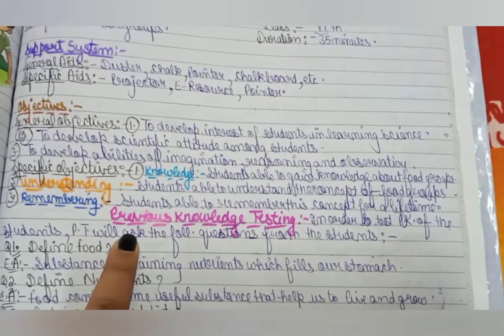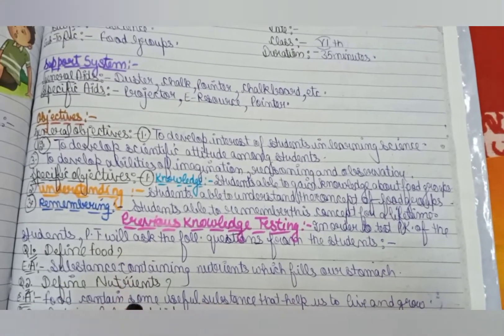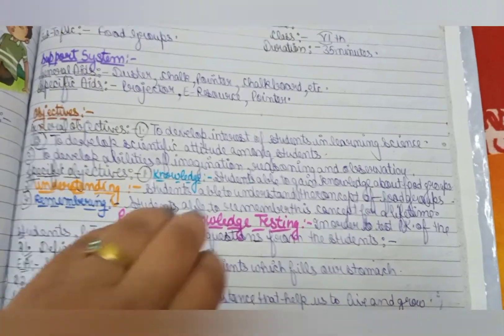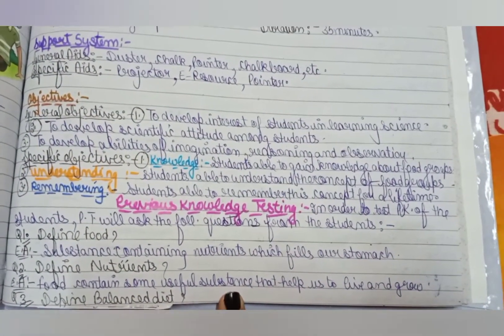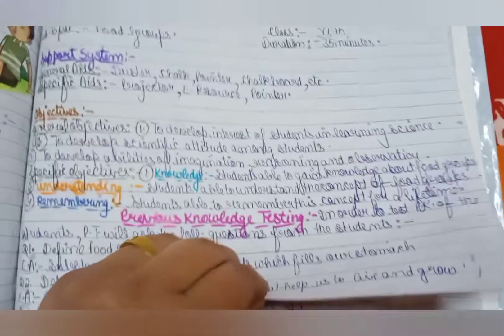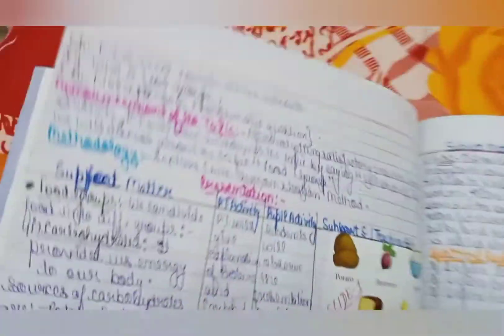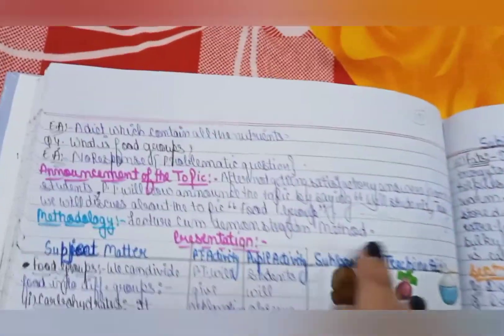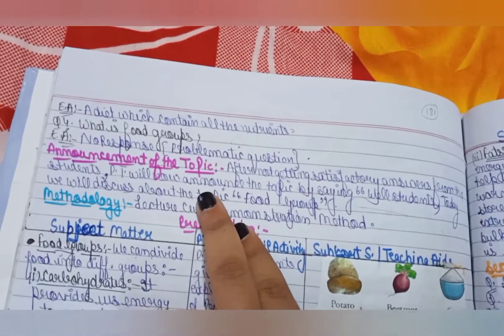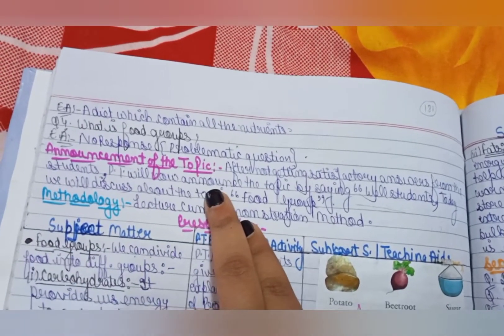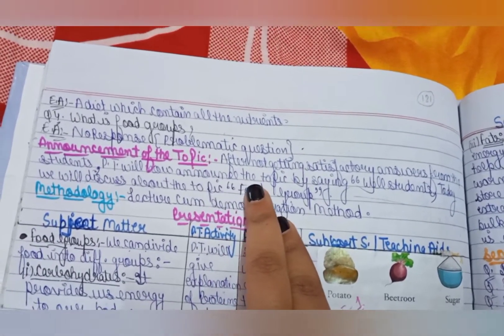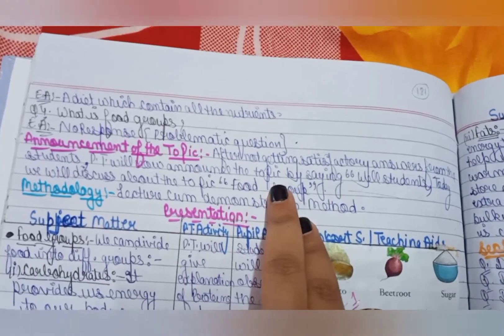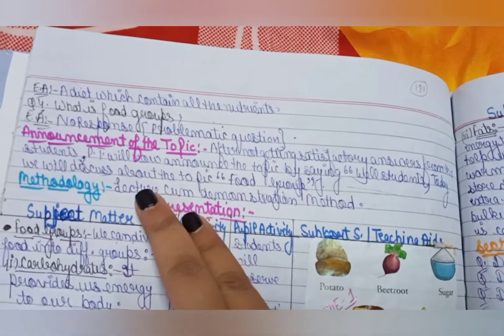In previous knowledge testing, the PT asks some questions to the children to find out what they already know, so they can continue from there. After asking questions, if the student is not giving answers, the PT will announce the topic to the students.